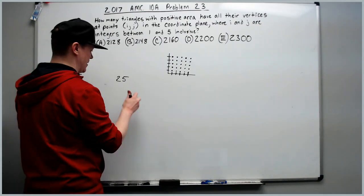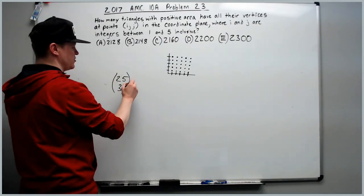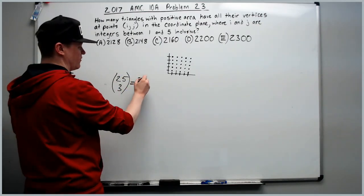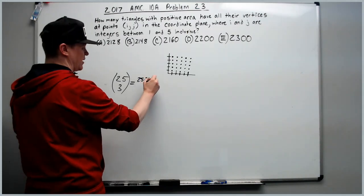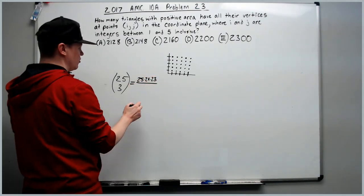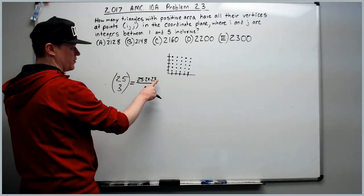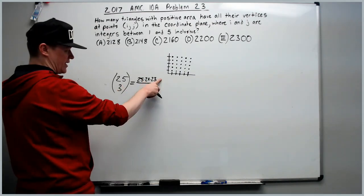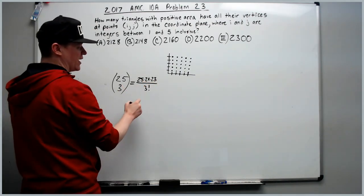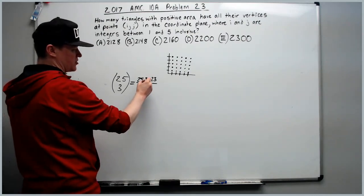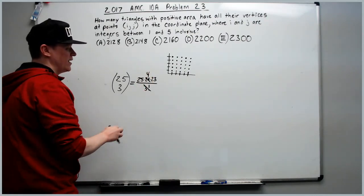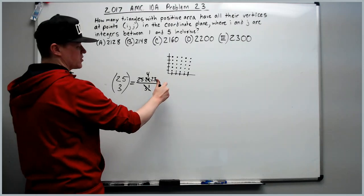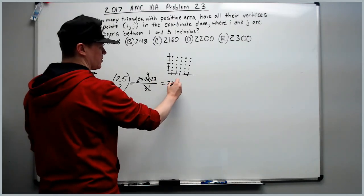I always do that. You probably do too. 25 choose 3 is going to be equal to 25 times 24 times 23 over 3 factorial. The 22 factorials are going to cancel. So we don't need to worry about them. 3 factorial is 6. It cancels with 24 to leave 4. This is going to be 100 times 23 is 2300.